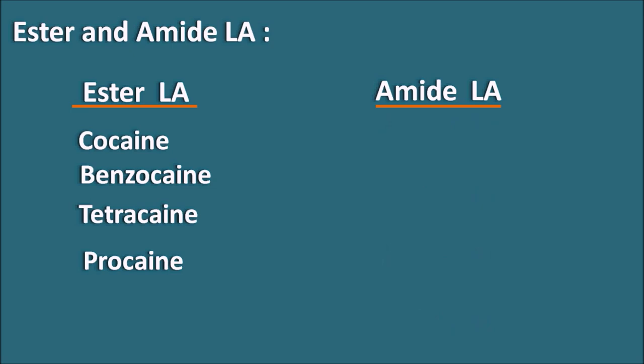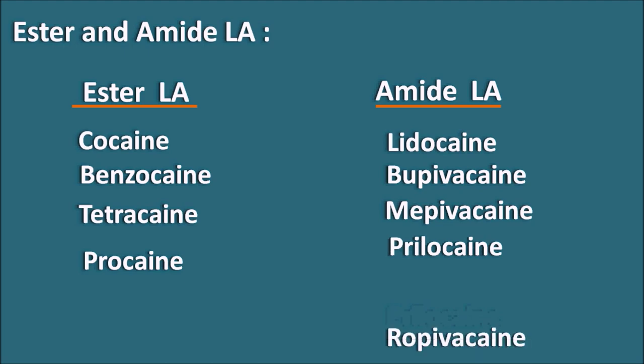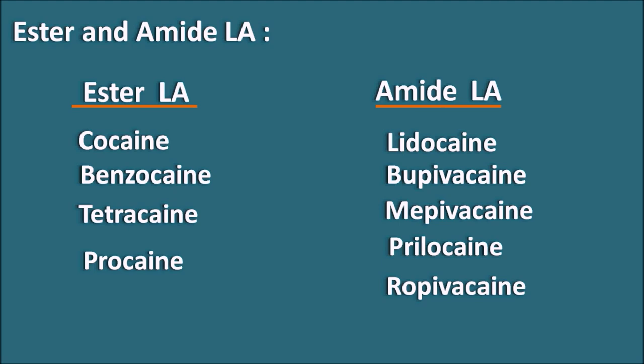Amide local anesthetics mainly include lidocaine, bupivacaine, mepivacaine, prilocaine, and ropivacaine. We have to observe that whether ester or amide local anesthetics, both end with '-caine', so we cannot identify whether a local anesthetic is ester or amide based on its suffix alone. But we can observe many differences between ester and amide local anesthetics in both pharmacokinetic parameters as well as pharmacodynamic parameters.